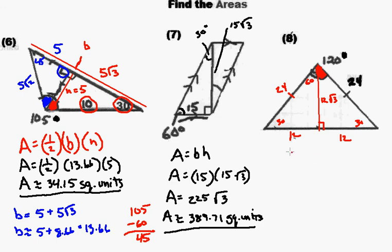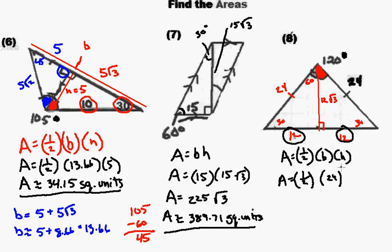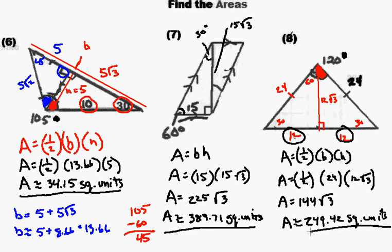So again, looking at my area, my area is equal to 1/2 times the base of the triangle times its height. Well, the base in this case is 24. These two added together give me 24. And my height is going to be 12 times the square root of 3. Well, if I multiply 1/2 times 24, I get 12. And if I multiply 12 times 12, I get 144. So that's 144√3. So the area is approximately going to be 144 times the square root of 3, which gives me 249.42. 249.42 square units. And that's our answer for number 8.